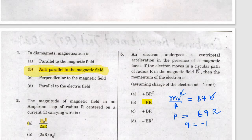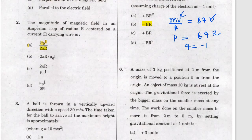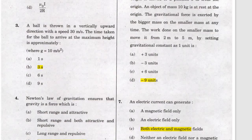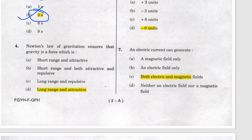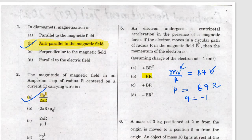First question: diamagnetic is antiparallel to the magnetic field — that is its property. Second question: the current loop is given, it is the mutual i to pi r. Third question: Newton's law of gravity — it is long range and attractive force. For momentum: bv squared r equals bqv, so momentum equals bqr.